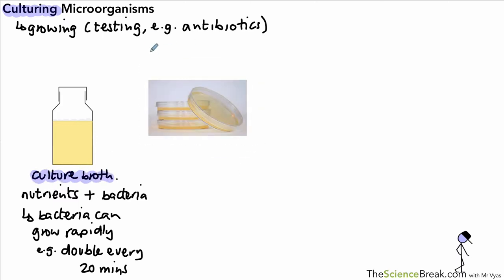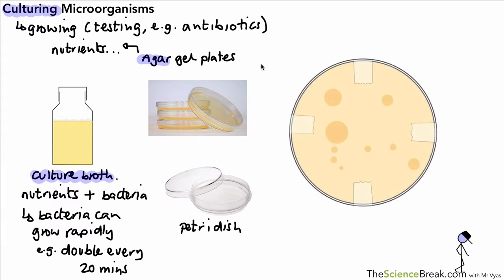There is another way of growing the bacteria as well and that's using what we call agar gel plates. These are basically petri dishes that contain nutrient. The agar does the same job as the culture broth and basically contains nutrients to allow the bacteria to grow. Here's an example of an agar gel plate with bacteria growing on it. Looking from above, you'll notice there are colonies of bacteria growing in those darker areas there.